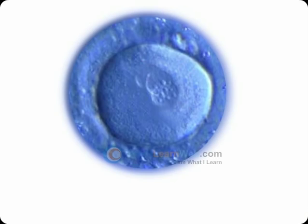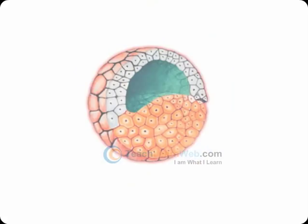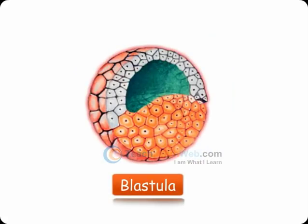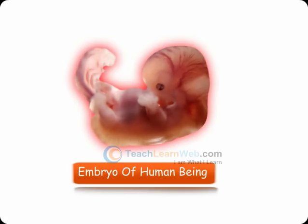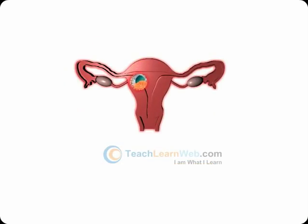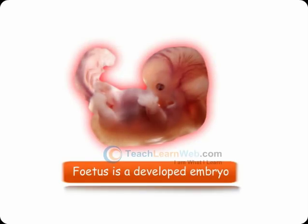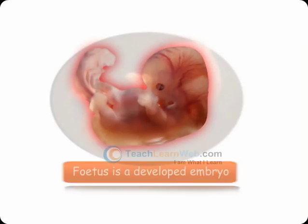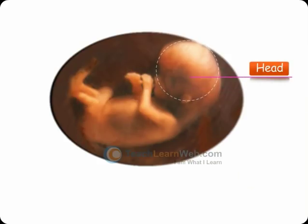The zygote divides repeatedly to give rise to a ball of cells. The cells begin to develop into tissues and organs of the body. This developing structure is called an embryo. The embryo gets embedded in the wall of the uterus and continues to develop into a fetus. Fetus is the developed embryo whose body parts can be easily identified. Mother gives birth to the baby.